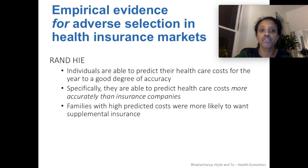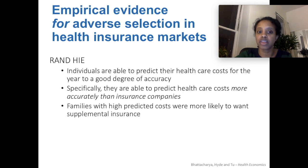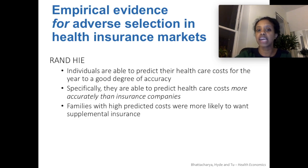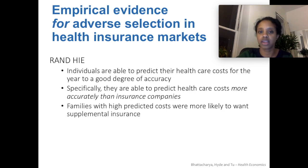So, empirical evidence for adverse selection. In the RAND health insurance experiment, individuals were interviewed, and people were actually able to predict their healthcare costs pretty well — better than the insurance company was able to — which suggests asymmetric information. Also, families with the highest predicted costs were more likely to want to get additional supplemental insurance, which suggests a positive correlation between risk and coverage.